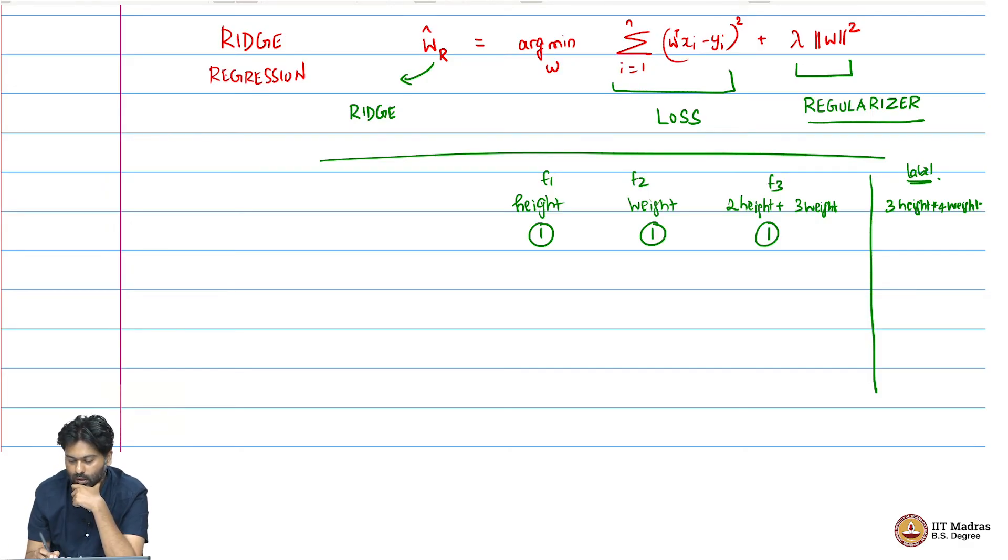But I could also have gotten this by saying this is just 0 and then there is some constant here and some constant here such that c1 times weight plus c2 times 2 times height plus 3 times weight also explains my label. Here is where I'm trying to avoid this redundancy. Another way to do this would be just 2, 3, 4 and 0 here.